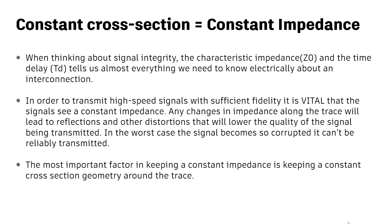A constant cross-section equals a constant impedance. When we're talking about signal integrity, if you know the characteristic impedance and you know the time delay of the trace, you know almost everything you need to know electrically about that connection. When dealing with high-speed signals, it is vital that the signal sees a constant impedance. Otherwise, your signal will become corrupted as it travels down the trace, and if the corruption is sufficiently severe, you're not even going to be able to receive the signal properly, which will create issues in your circuit.